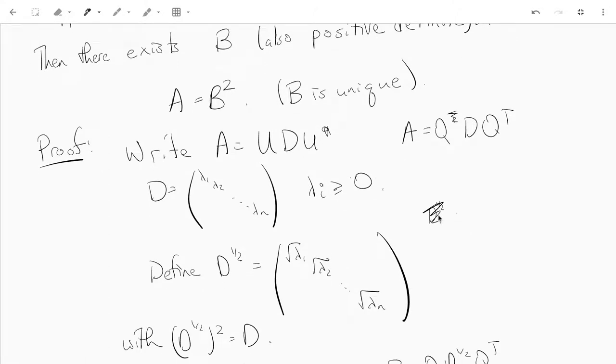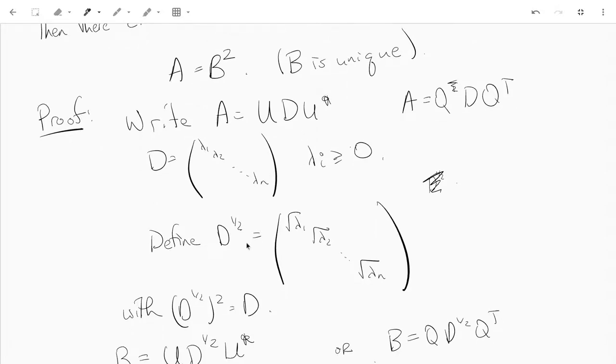And that is actually related to showing that B, the square root of A, is unique, but we won't be doing that. So just notice that D^(1/2) squared is D.